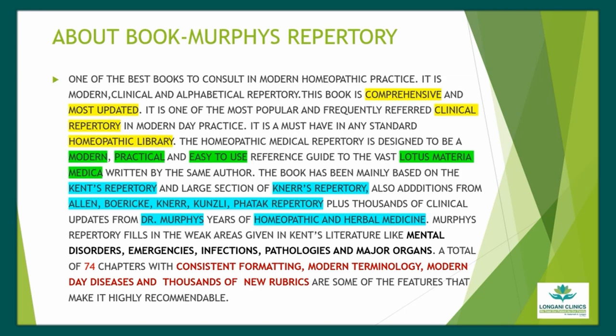Murphy's Repertory fills in the weak areas given in Kent's literature like Mental Disorder, Emergencies, Infections, Pathologies, and Major Organs. A total of 74 chapters with consistent formatting, modern terminologies, modern day diseases, and thousands of new rubrics are some of the features that make it highly recommendable.